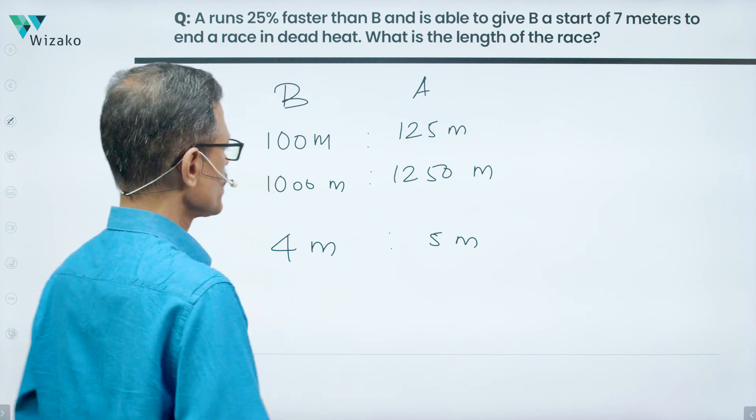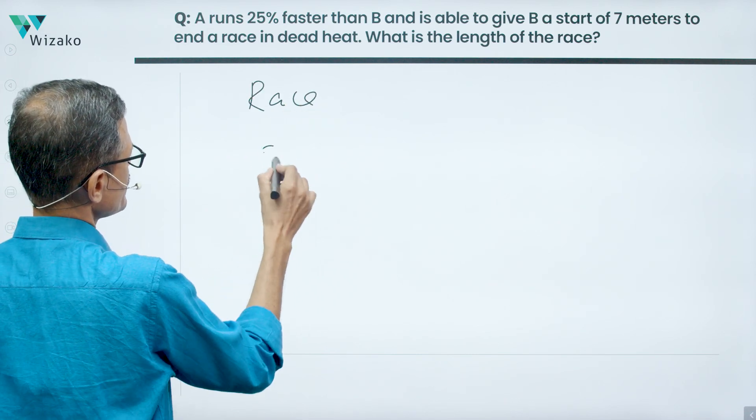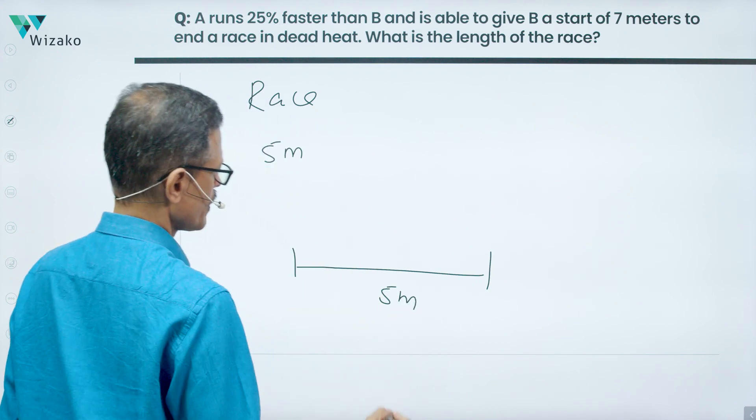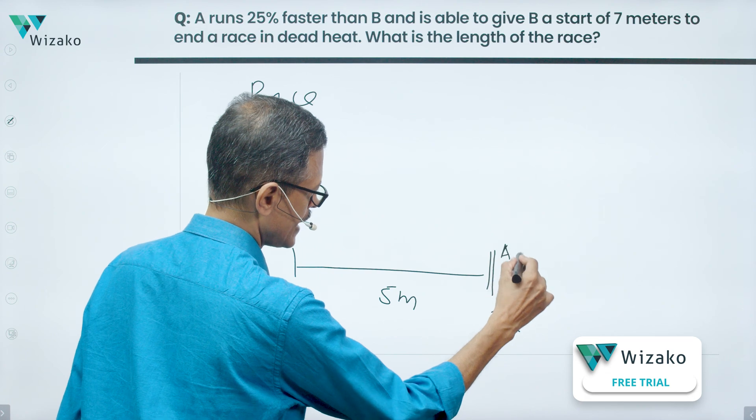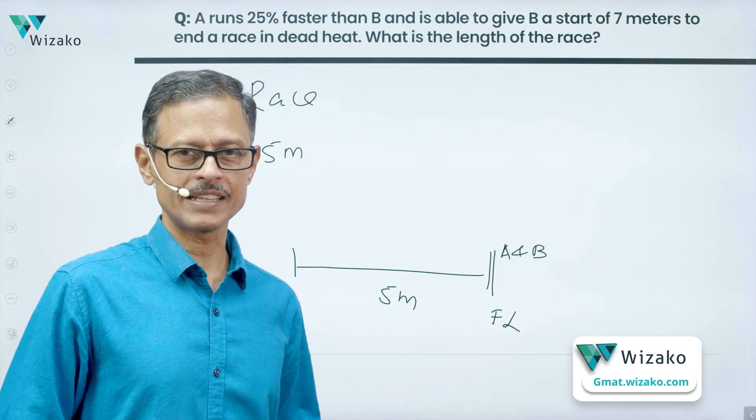Now if we have a race between A and B, the length of the race is a 5 meter race. We want A and B to be at the finishing line together. Both A and B should finish the race in a dead heat, so that they are at the finishing line at the same time.